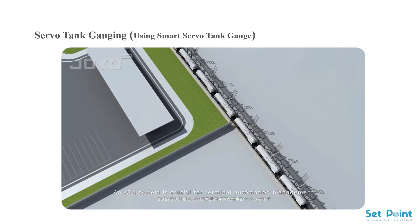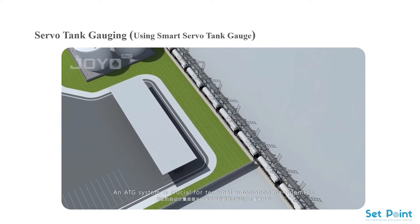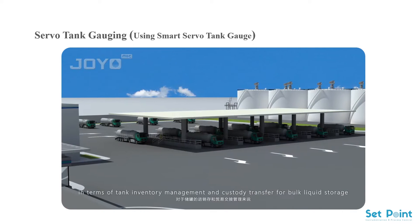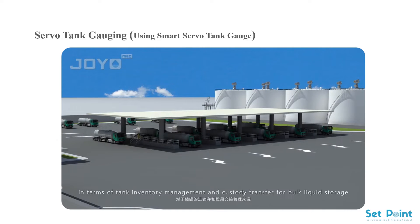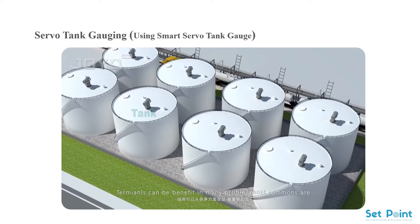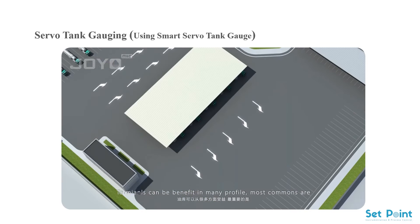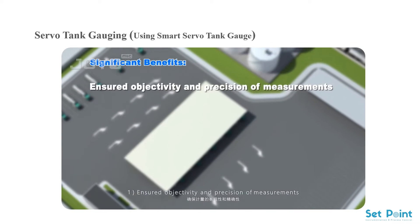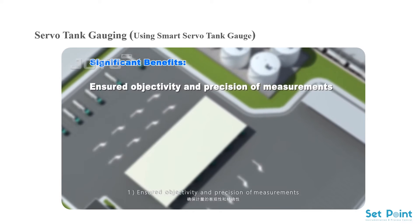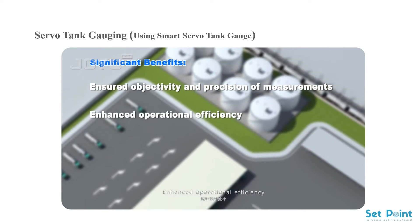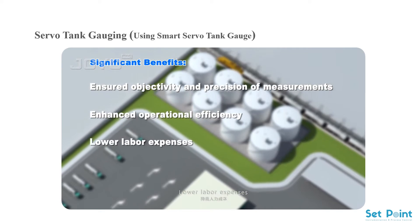An ATG system is crucial for terminal automation management in terms of tank inventory management and custody transfer. Bulk liquid storage terminals can benefit in many ways; the most common benefits include ensured objectivity and precision of instruments, enhanced operational efficiency, and lower labor expenses.